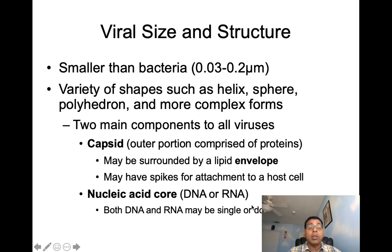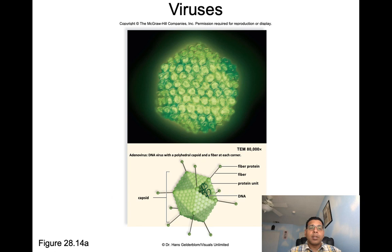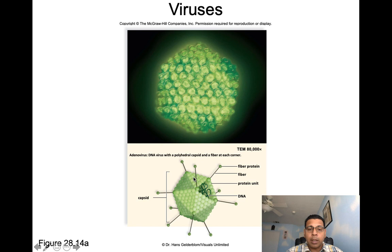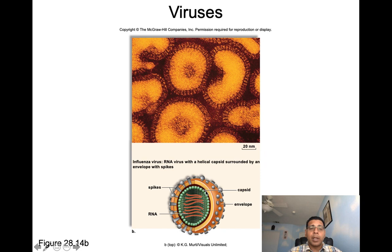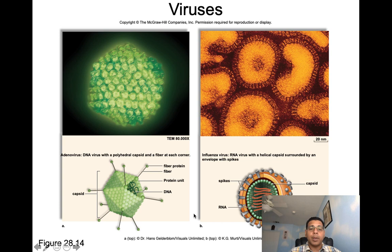Here we can see pictures of some viruses. Adenovirus is a DNA virus with a polyhedral capsid and a fiber at each corner — one company, AstraZeneca, is using this for COVID vaccines. Looking at the capsid in greater detail, you can see all the protein units, the fiber protein, and DNA inside. The influenza virus is an RNA virus with a helical capsid surrounded by an envelope with spikes on it. Here we can see those spikes, the envelope surrounding the capsid, and RNA inside.